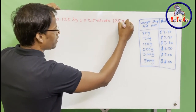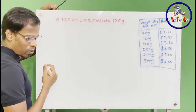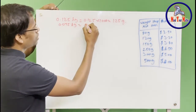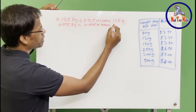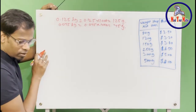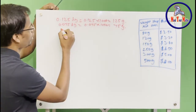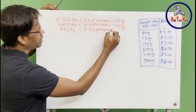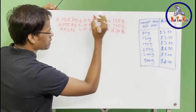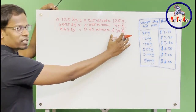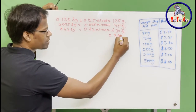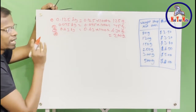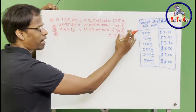That gives us 125 grams. The second value is 0.075 kilograms, which is 0.075 times 1000, equals 75 grams. The third value is 0.43 kilograms, which is 0.43 times 1000, equals 430 grams. The fourth value, 200 grams, is already given in grams, so no conversion is needed. We now have all four values in grams to match the table.